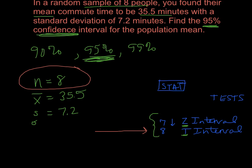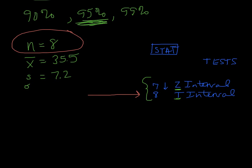So in your calculator, you would select T interval and hit enter. And your calculator is going to ask you information. So it's going to say, first of all, input. So it wants to know, are you giving me the list of numbers of all eight people? And what their commute time is, that would be data.